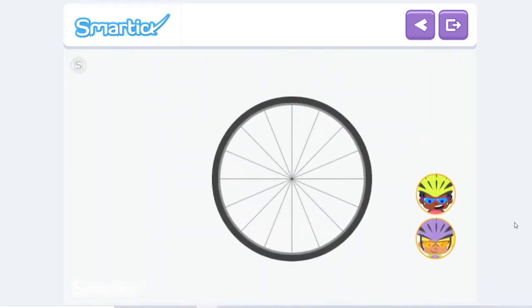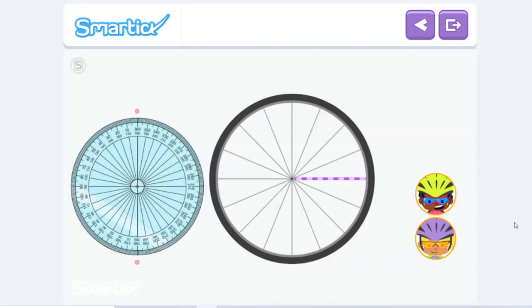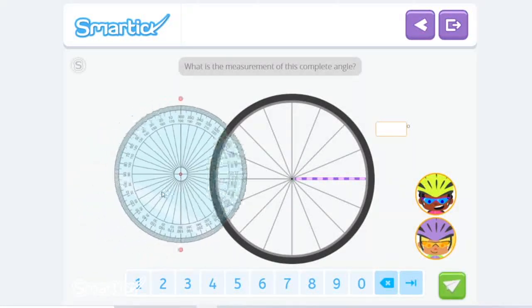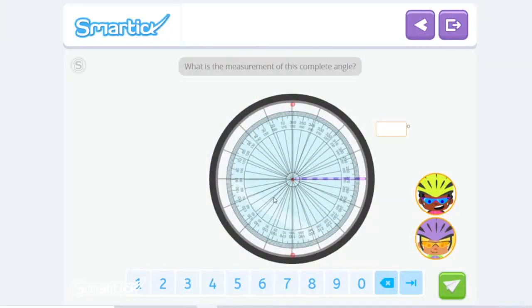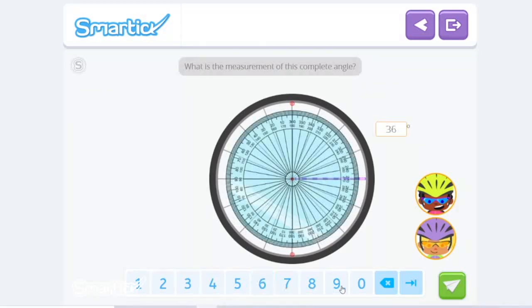Eva and Zoe want to decorate their back wheels so that they are the same. They decorate one of the spokes to mark a beginning and end of a complete angle. To help measure the complete angle, we are going to use a special tool. A protractor that can measure an angle from inside the circumference. What is the measurement of this complete angle? Let's grab our special protractor and measure the full angle. We start from here all the way around, and that gives us a full 360 degrees.